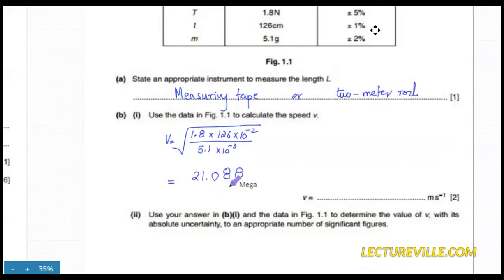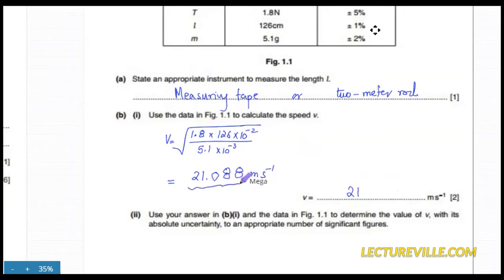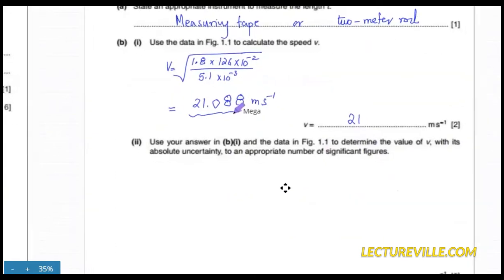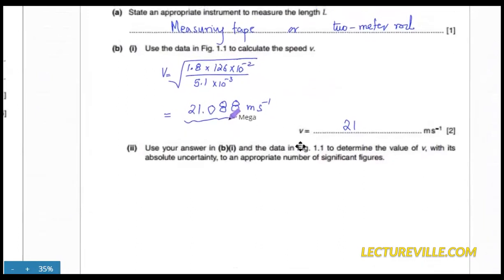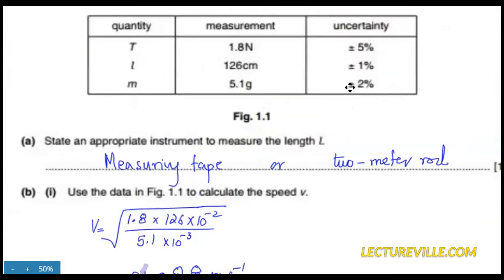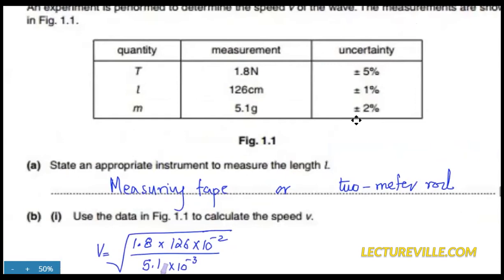That result has too many significant figures to present directly. For the examiner, write 21 m/s, but keep the full value noted for subsequent parts. Regarding significant figures: the quantities are given in two significant figures, so the answer should be in at least two significant figures. Absolute uncertainties must always be given to one significant figure.